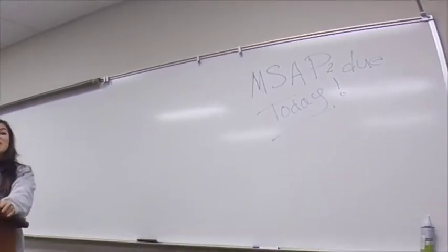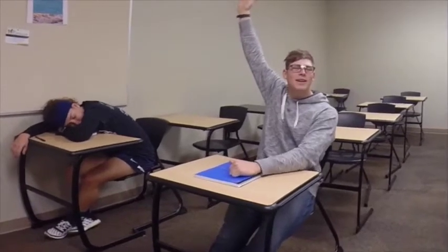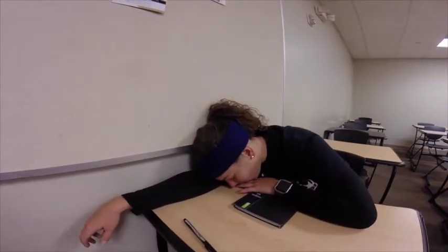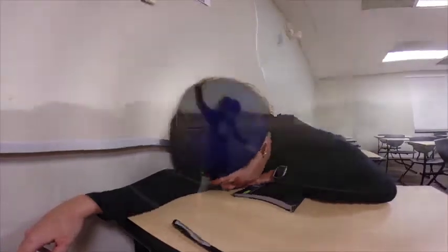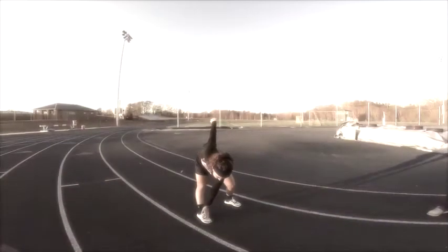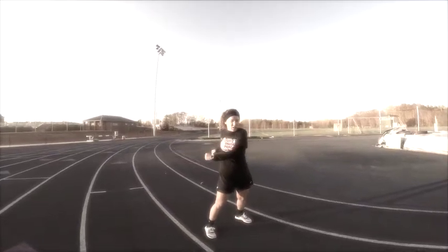Okay class, today we're going to be learning about closed-loop control systems. Any questions? Yes, Cory? What is that? A type of control that involves the use of feedback and activity of error detection and correction processes to maintain the desired state. This is used by people to control slow, deliberate movements.